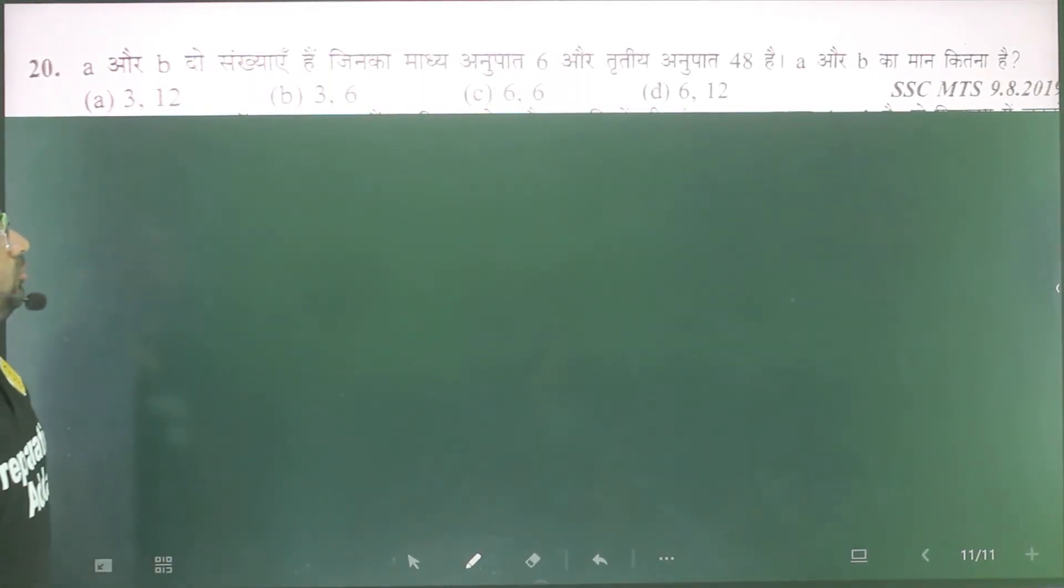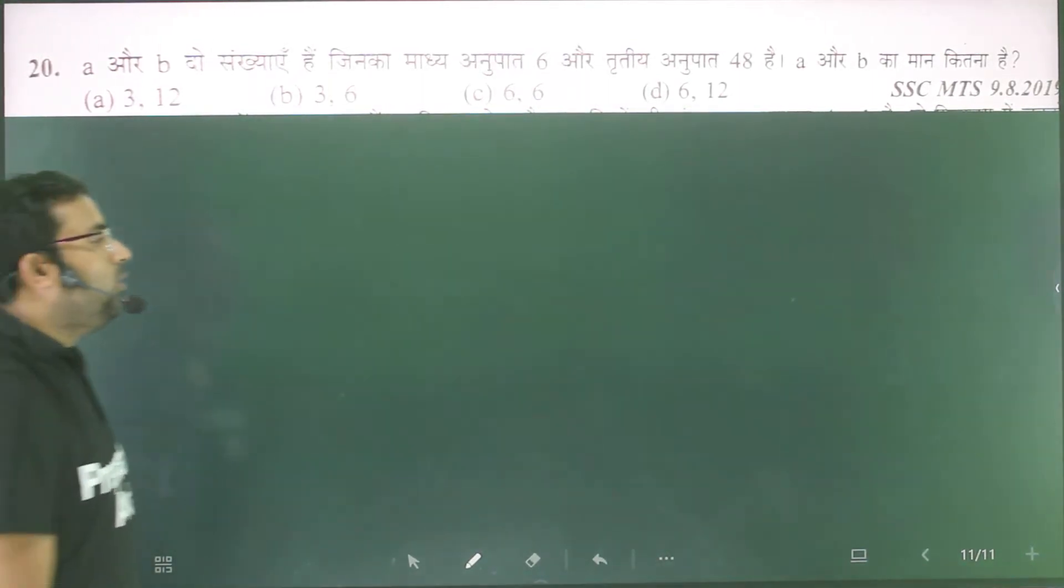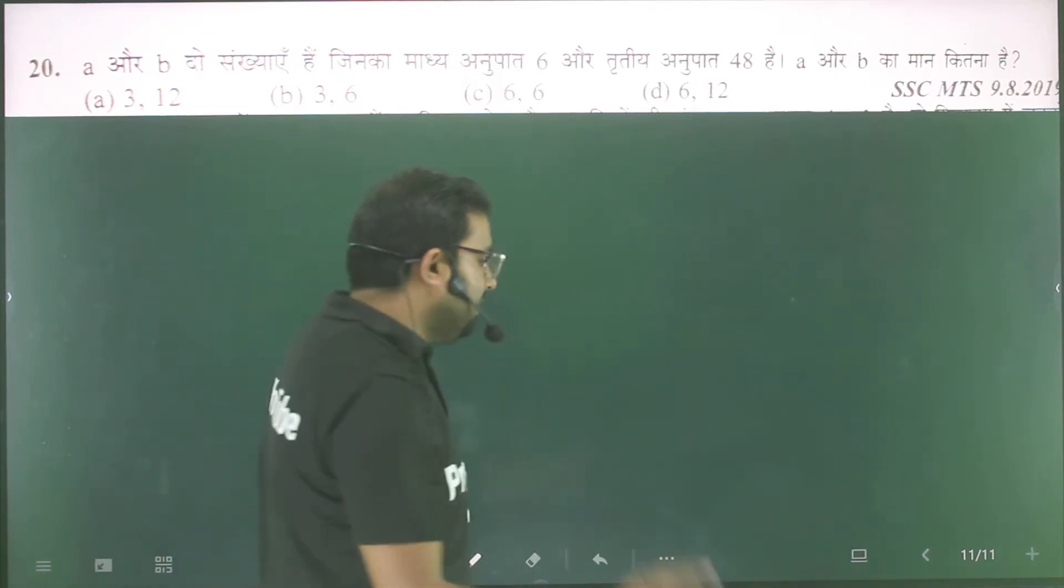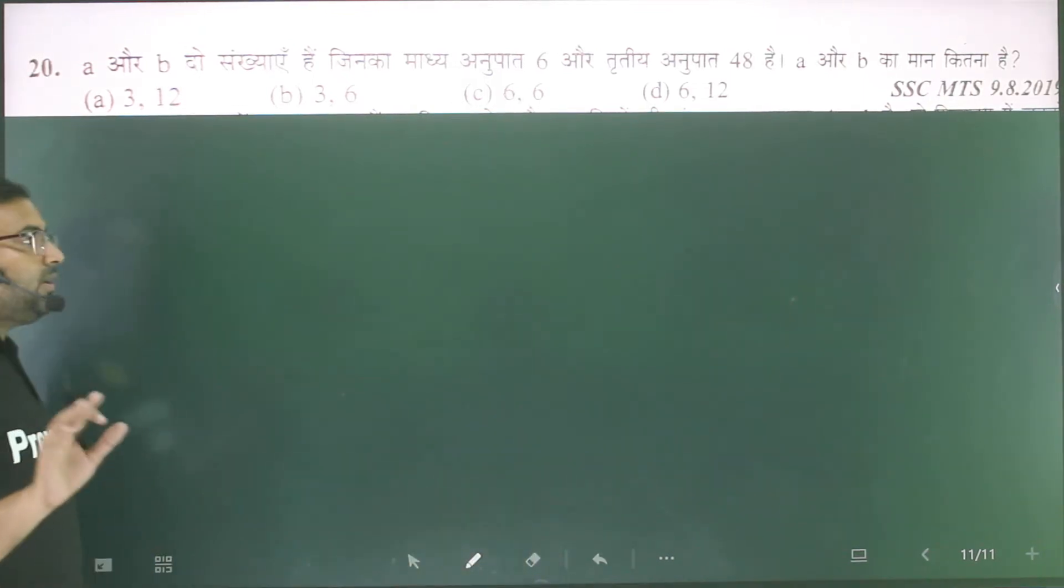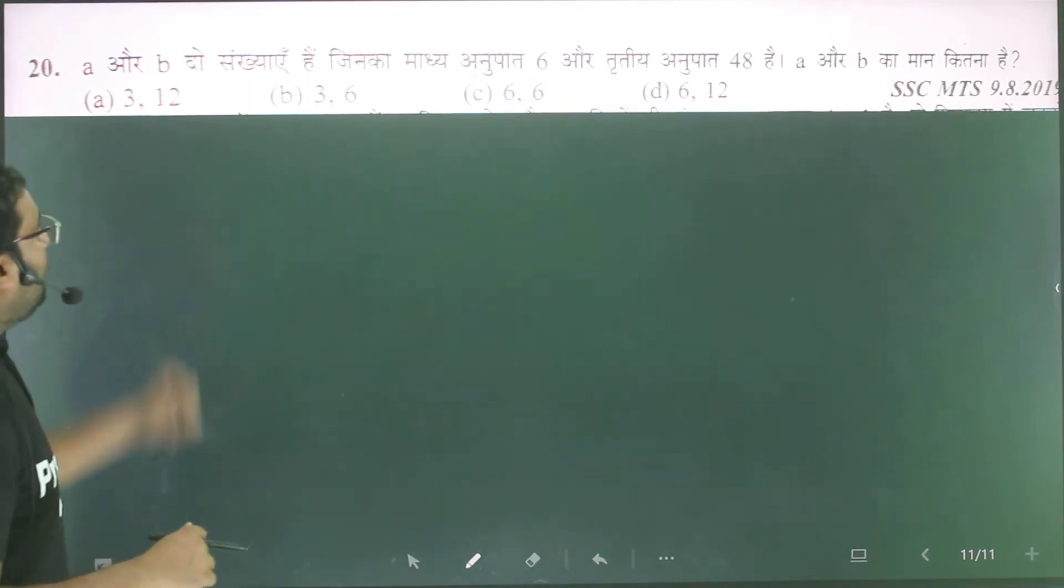A and B are 2, which is 6, and 33 is 43. So how much are A and B? We're going to do it with options. I've already told the conventional method in the previous question. I will do it with options.